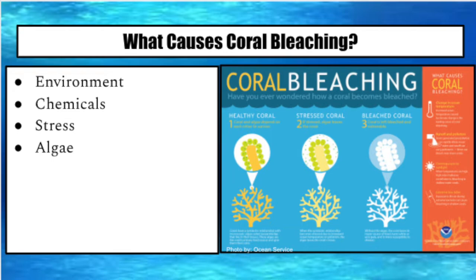All of this is caused by problems associated with climate change. Some things that can affect coral include a change in ocean temperature, runoff, pollution, overexposure to light, and extreme low tides. Climate change is the leading factor in coral bleaching.